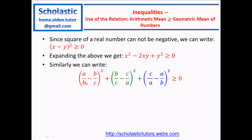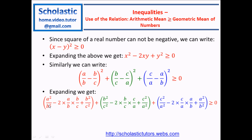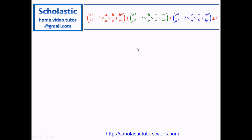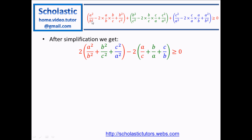If we expand this expression, we can use X squared minus 2XY plus Y squared. Basically, A squared over B squared minus 2 times A over B times B over C, plus B squared over C squared. Similarly we expand the other terms, all of which are greater than or equal to 0. If you look here, this B and this B will cancel off, this C and this C will cancel off, and this A and A will cancel off. So we end up with two A squared over B squared.